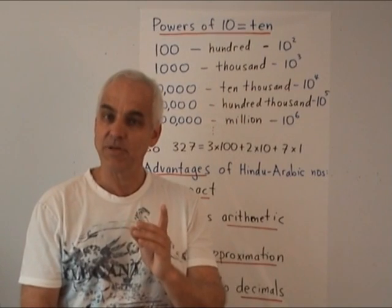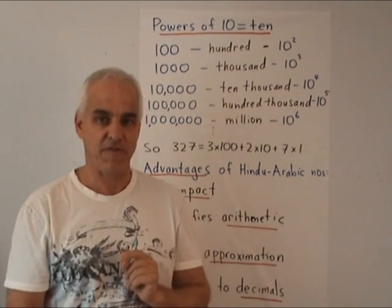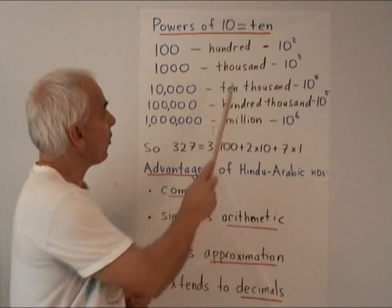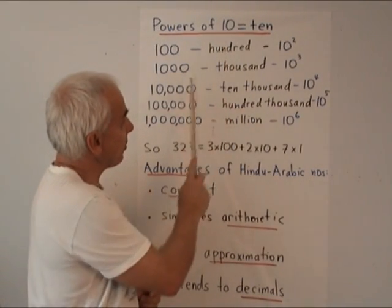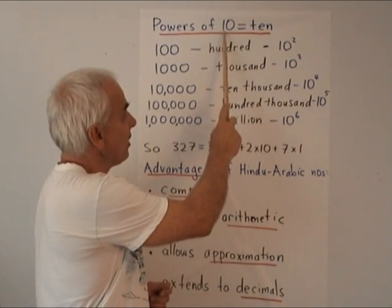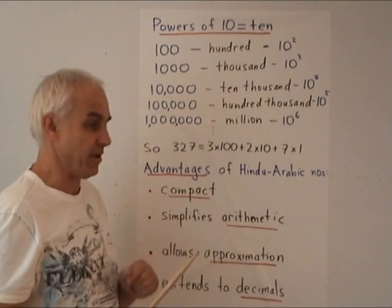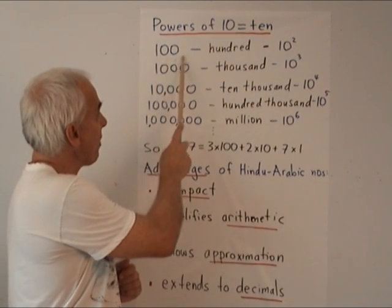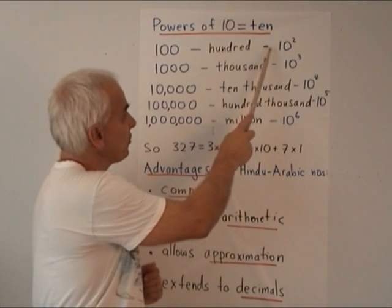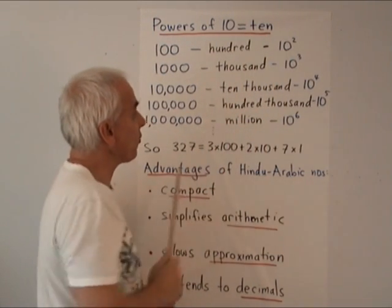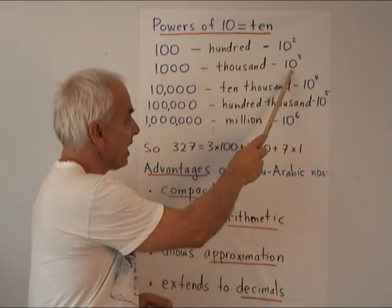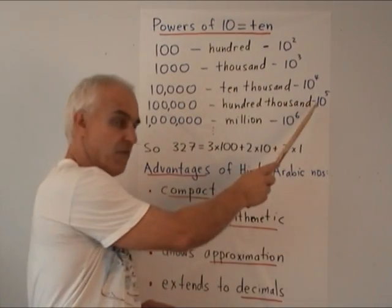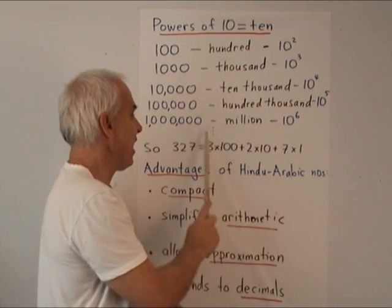The Hindu-Arabic number system allows us to deal with large numbers very effectively, and one interesting innovation is that powers of ten become important. The symbol 10 stands for zero ones and one ten. A hundred — one zero zero — is ten times ten, or ten squared. A thousand is ten cubed, or ten times ten times ten. Ten thousand is ten to the fourth, one hundred thousand is ten to the fifth, and one million is ten to the sixth, and we could keep on going.